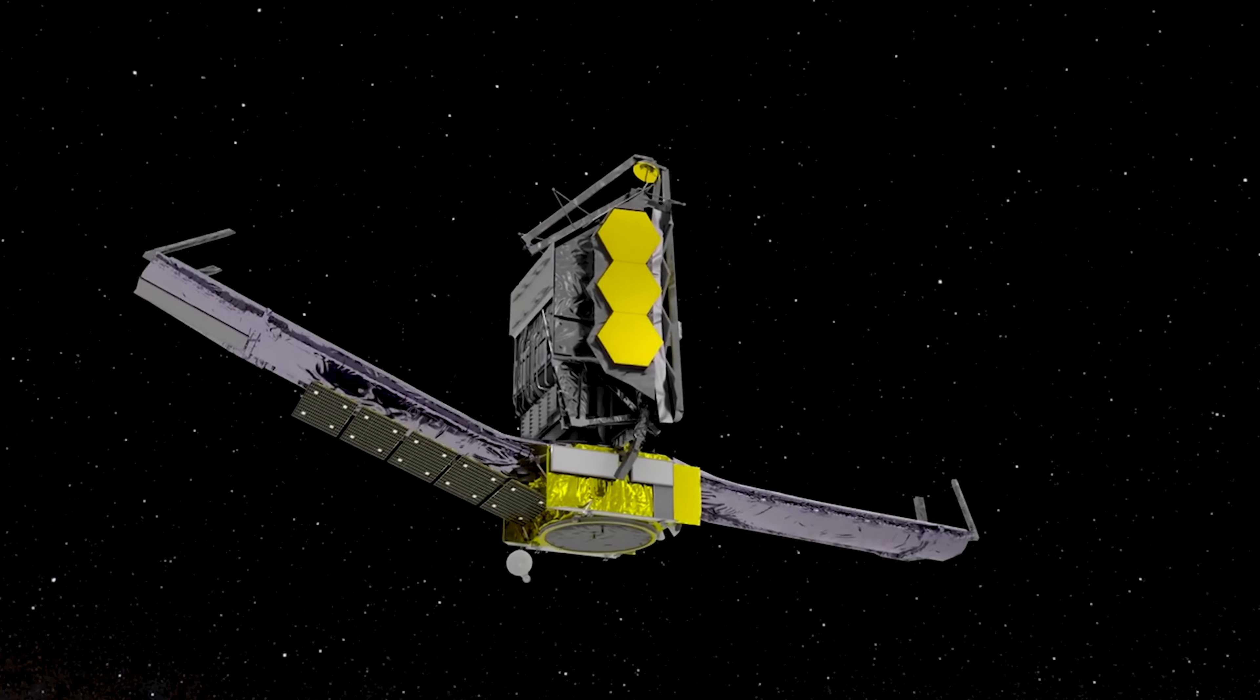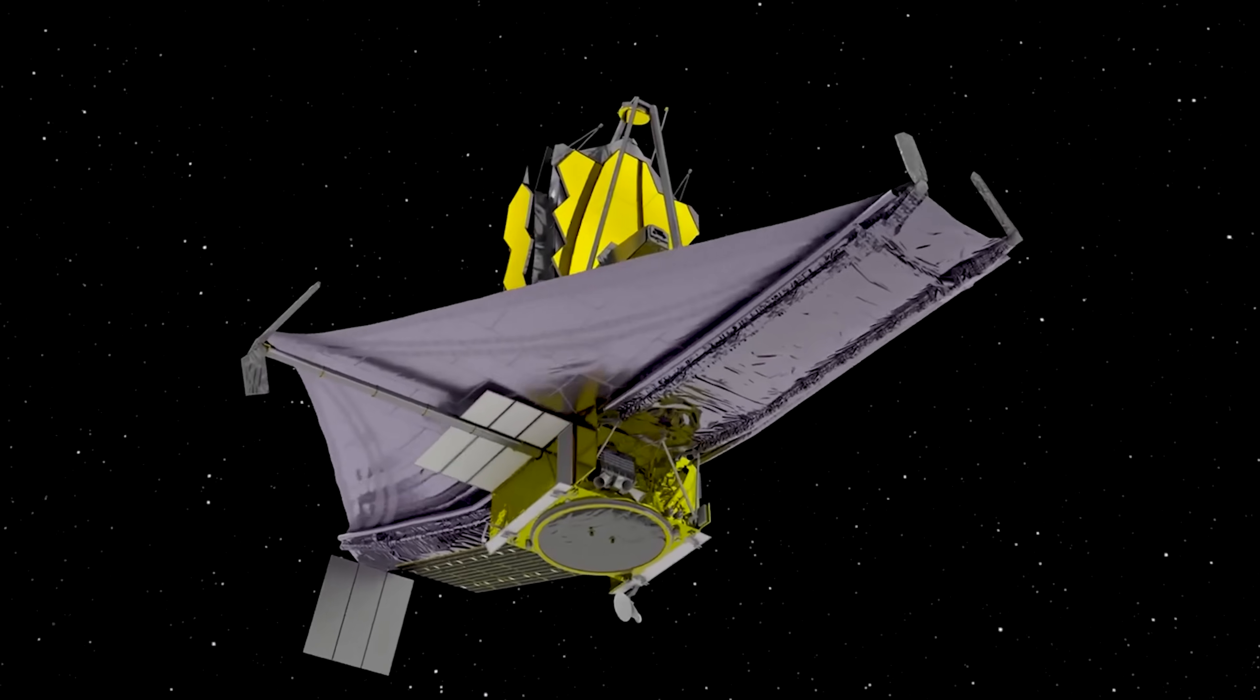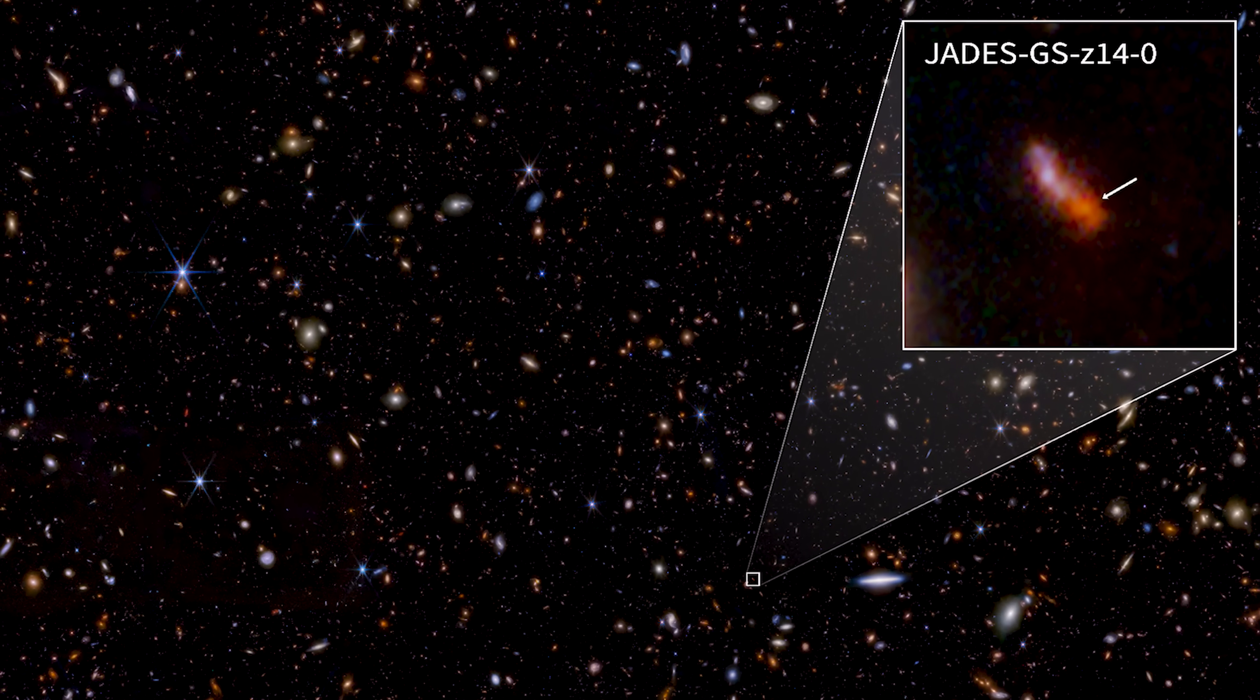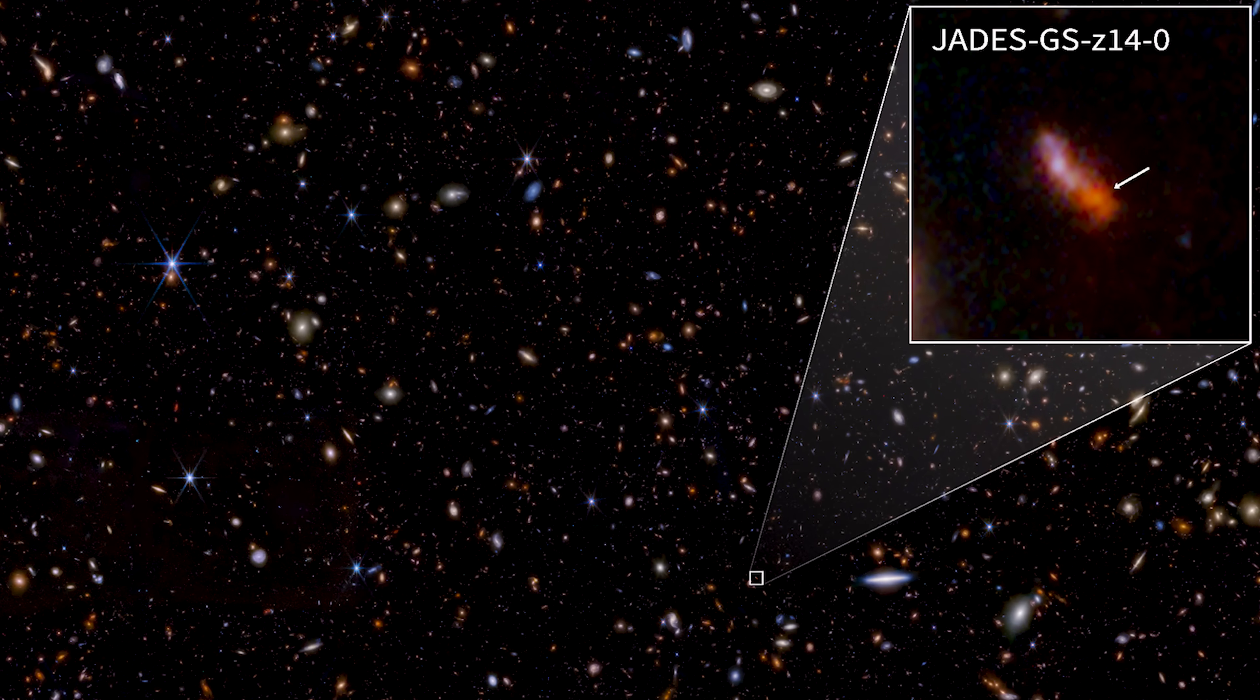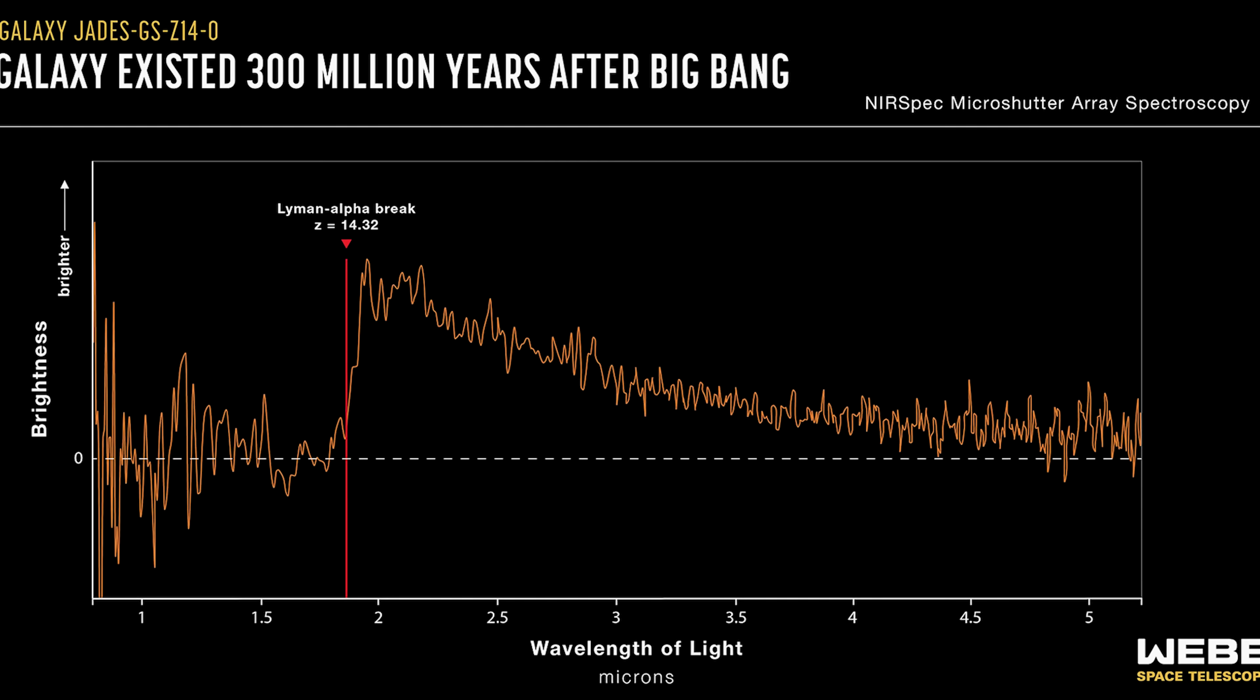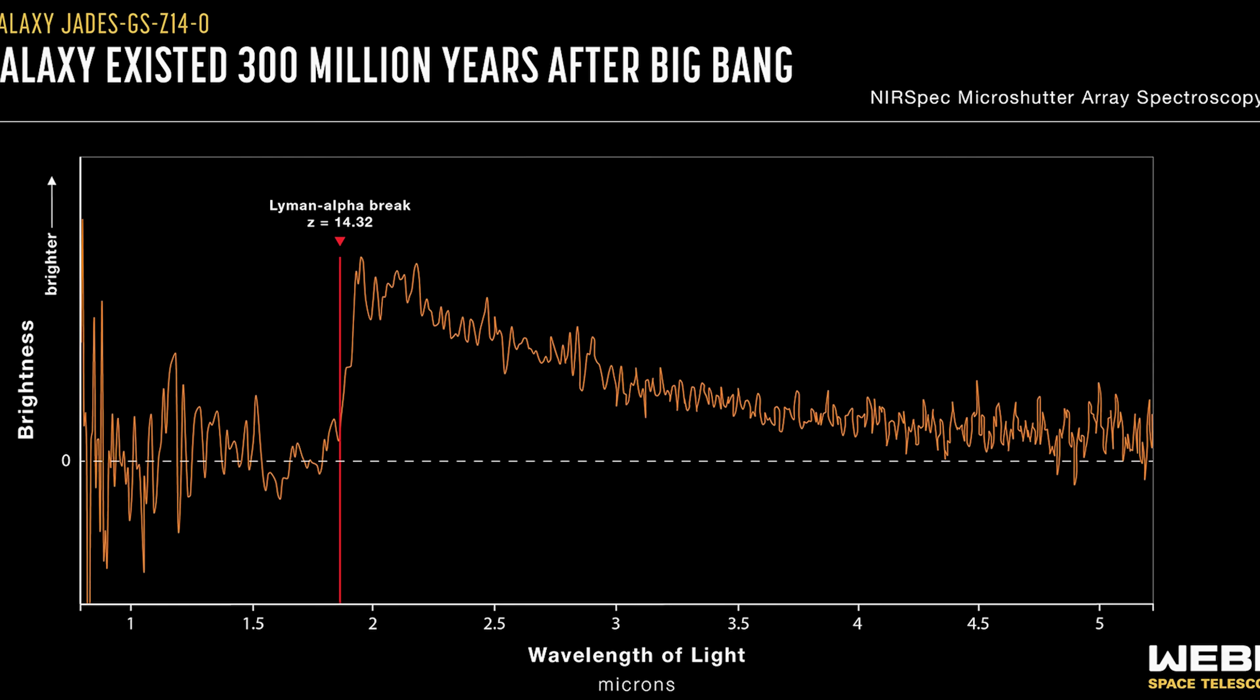Webb's unprecedented clarity allows us to peer 13.5 billion years into the past, glimpsing galaxies like JADES-GS-z13, which shone just 400 million years after the Big Bang. Its light, stretched into the infrared by the expansion of the universe, carries secrets about the earliest eras of star formation.